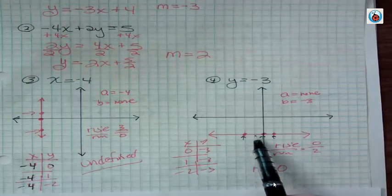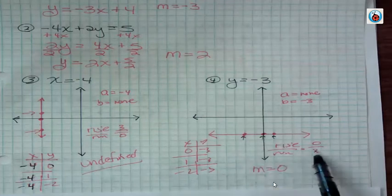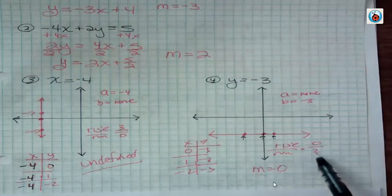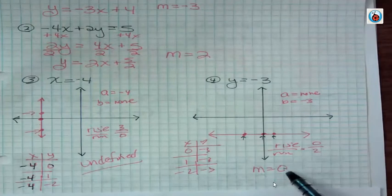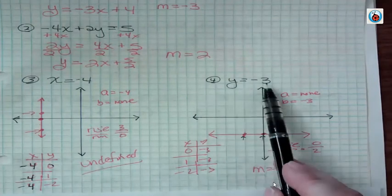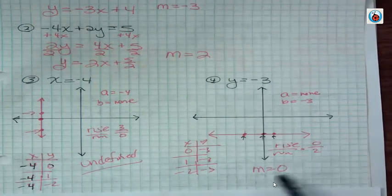And then from one point to the next, we could have 2 or 3. It doesn't matter because 0 divided by anything is still 0. So when you have y equals some number, your slope is always going to be 0.